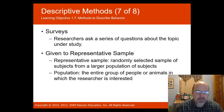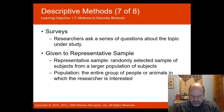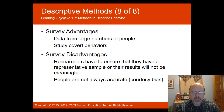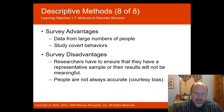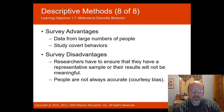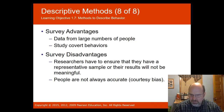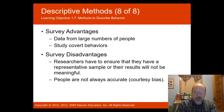Surveys are where researchers ask a series of questions about a topic under study. A representative sample is the portion of the population studied. Advantages: you can draw data from large numbers of people and study covert behaviors, since people are more likely to share information in an anonymous survey. Disadvantages: researchers must ensure a representative sample, and people are not always accurate due to courtesy bias — answering what they think is expected. The wording or order of questions can also sway respondents.